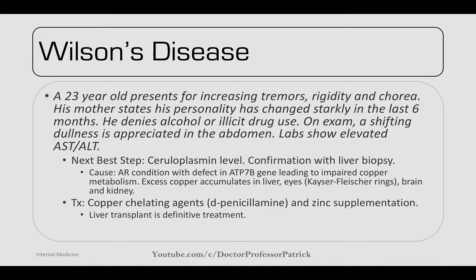Wilson's disease — a 23-year-old with increasing tremors, rigidity, and chorea. His personality has changed and he denies alcohol or drug use. On exam there's shifting dullness in the abdomen and elevated AST and ALT. Next best step: ceruloplasmin level, confirmed with liver biopsy staining for copper. Autosomal recessive condition with a defect in ATP7B gene causing impaired copper metabolism. Excess copper accumulates in the liver, eyes (Kaiser-Fleischer rings), brain, and kidneys. Treat with copper chelating agents like D-penicillamine and zinc supplementation; liver transplant is definitive.